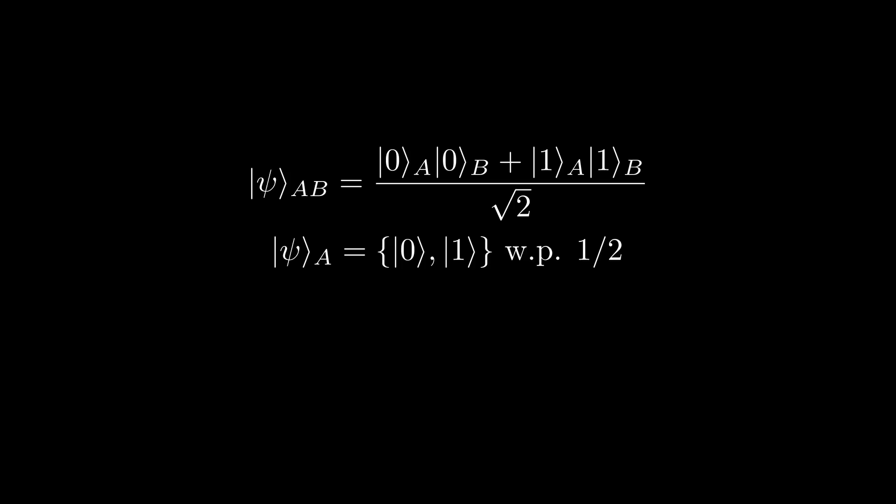Consequently, it would seem as though the best way to describe the state of A is some kind of classical uniform probability distribution over the states 0 and 1. But how do we even describe such a state?